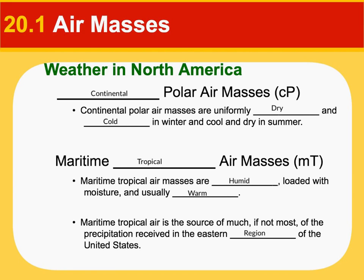Continental polar air masses — lowercase c for continent, so dry; capital P for pole, so cold — these bring dry, cold weather down from the north. Maritime tropical air masses are the humid, warm air, especially in the southeast in summer — that very warm, humid, uncomfortable weather. It's important to note that maritime tropical air masses are responsible for most of the precipitation in the eastern United States, due to that warm, humid air coming from the Atlantic and Gulf of Mexico.